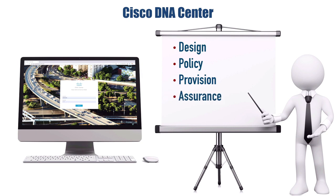Another big part of Cisco DNA Center is assurance. This is where we can monitor the health of the network and help with troubleshooting. If there are existing faults we can see what those are, and based on Cisco's experience, DNA Center is going to give us feedback about what we should do to resolve the issue. It also has a path trace tool — if we're not getting from point A to point B in the network, we can simulate a ping or telnet session between two devices. If there's an access control list blocking that traffic, it's going to give us a graphical representation showing exactly where that ACL lives. We can also do network time travel, so if there was an issue at 2 a.m. last night, we can go back in time and see what was happening on the network at that time.